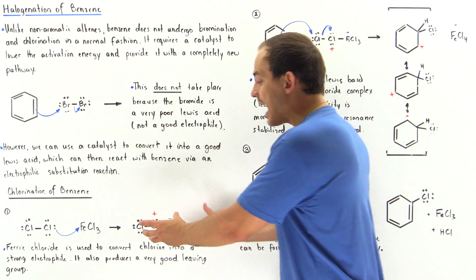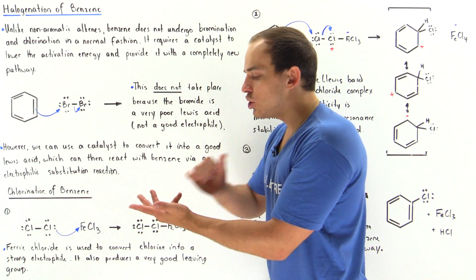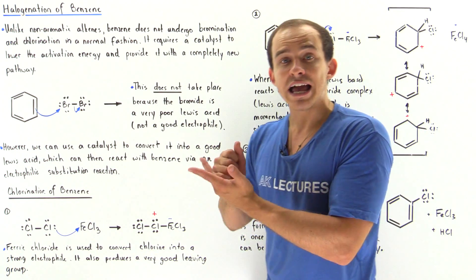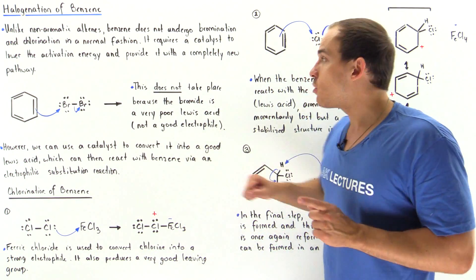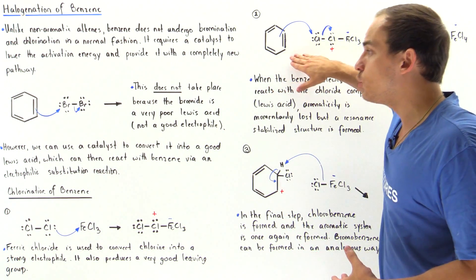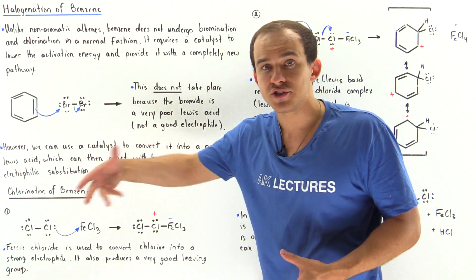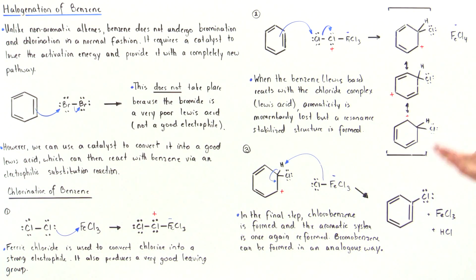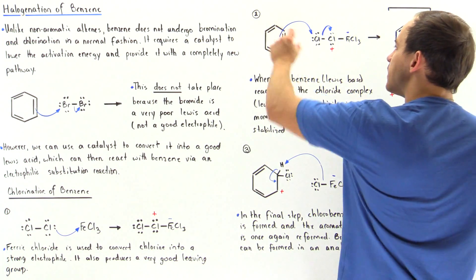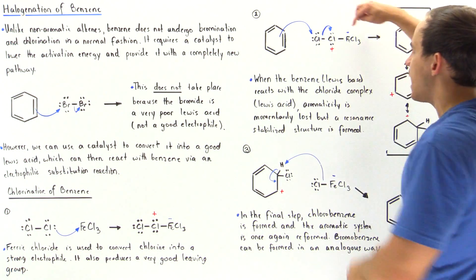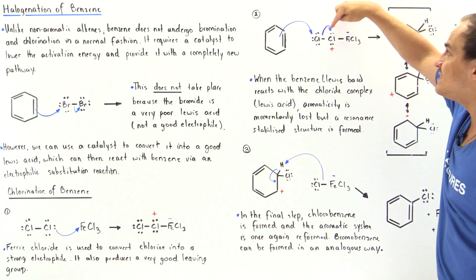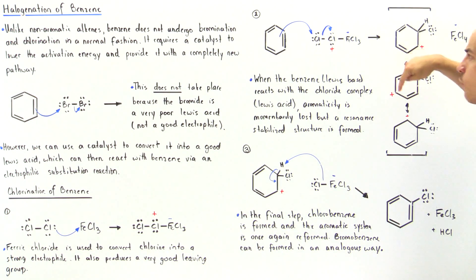Now we have a complex ion that is a good Lewis acid, a good electrophile, and also contains a good leaving group for our benzene to actually act as the nucleophile, as the Lewis base, to react with our good Lewis acid. One of the pi bonds basically forms a sigma bond between the carbon and our chloride atom, displacing this good leaving group.